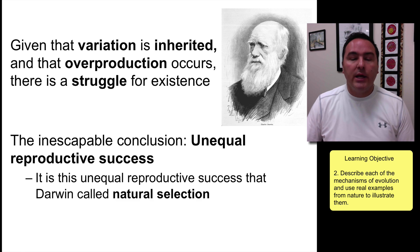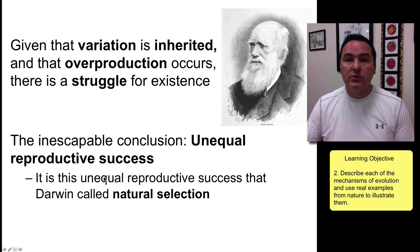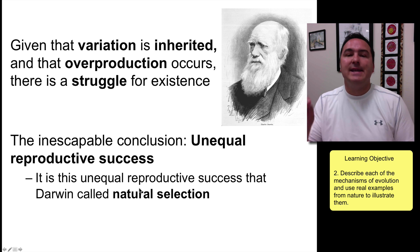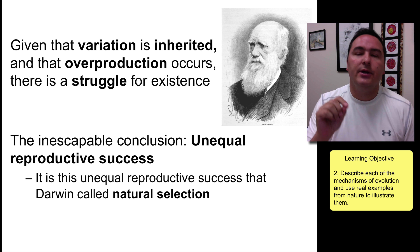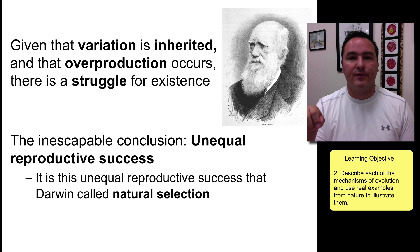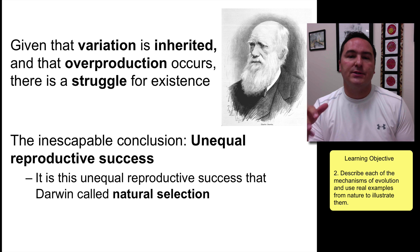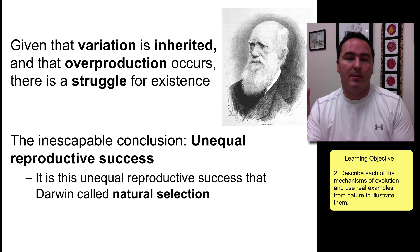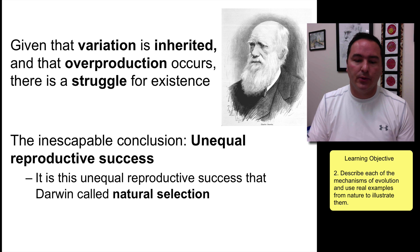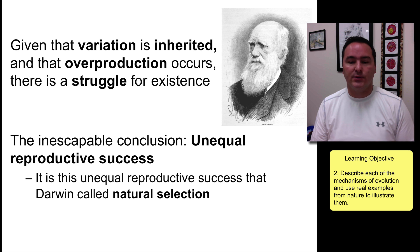This unequal reproductive success — where some individuals in a population are just better suited to survive than others — is called natural selection. Nature selects against individuals not as well suited in a particular environment; they have less of a chance of surviving. Those that are a little bit better suited tend to survive and reproduce. That's why it's called natural selection.